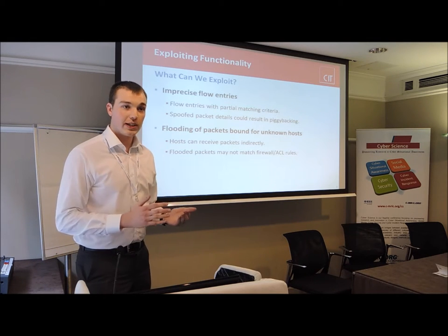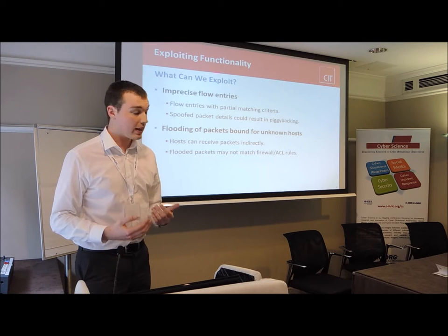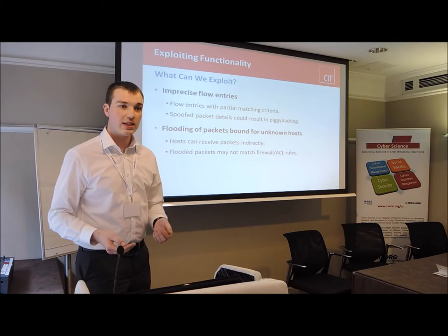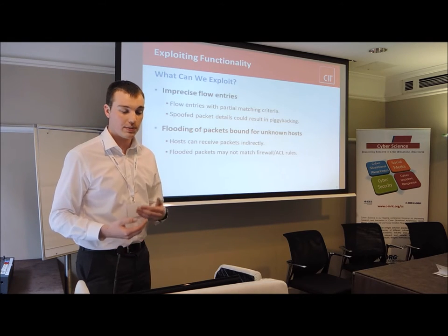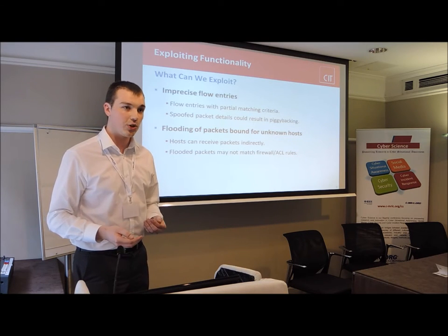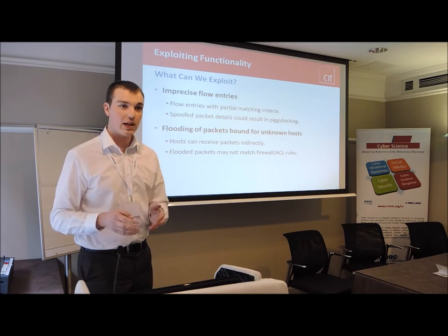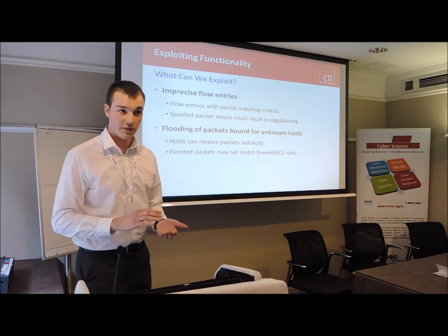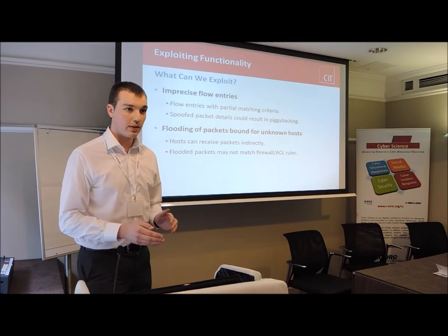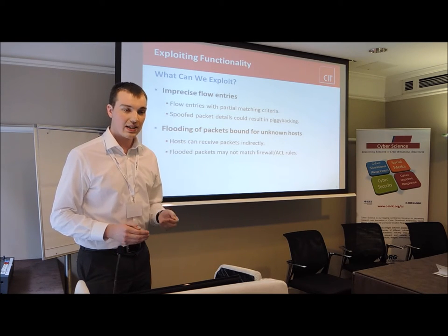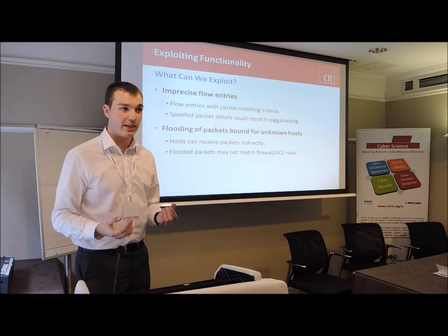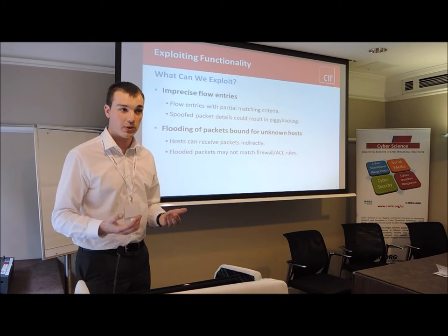What functionality can we actually exploit? Imprecise flow entries are flow entries which only use partial matching criteria. These types of flow entries could allow an attacker to spoof certain packet details and have their packets piggyback on an existing flow. This is an issue because any piggybacked packets will never be sent to the controller, so the controller can never observe them. Additionally, the flooding of packets bound for hosts whose location is not known can essentially allow a host to receive a packet from another host indirectly, even if security rules exist to prevent direct communication between those hosts.